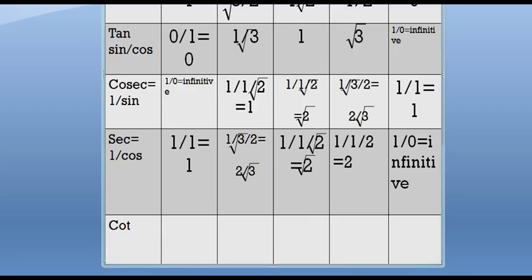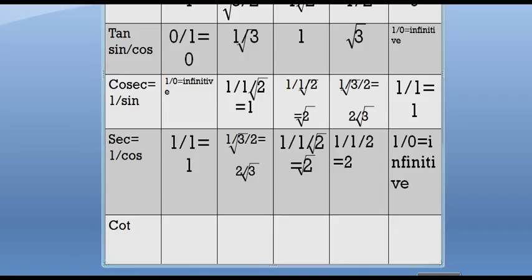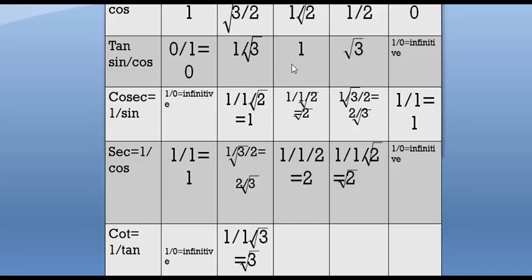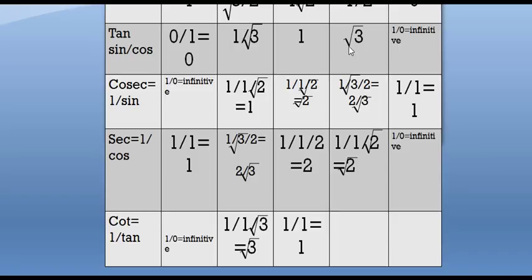Now come to cot. As we know, cot is 1 by tan. So we have the value of tan and we can write cot as 1 by tan. Start from cot 0: 1 by 0 is equal to infinity. Cot 30: 1 by 1 by root 3 is equal to root 3. Cot 45: 1 by 1 is equal to 1. Cot 60: 1 by root 3 is equal to 1 by root 3.